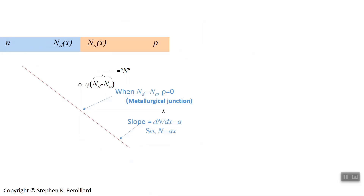Let's take a close-up of the graph. Horizontally it goes across the semiconductor, and the whole picture shown is the junction region. The junction is a line, but the region around it is the junction region. Vertically is graphed the net dopant density — number of donors minus number of acceptors — which we'll call N for mathematical purposes. At the point where donor and acceptor counts are equal, it's called the metallurgical junction.